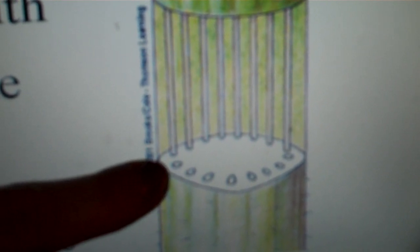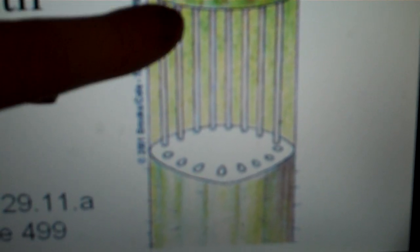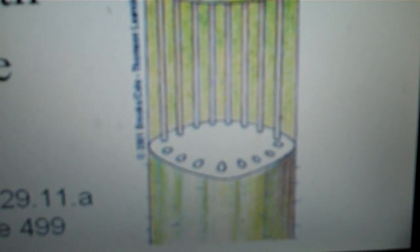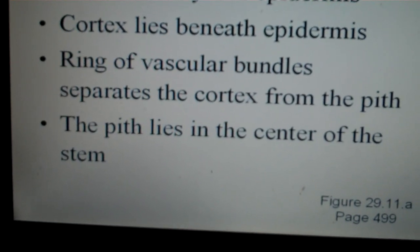You can see in this picture, we have our epidermis, then the cortex, a very thin layer. These little tiny circles are our vascular bundles, or you can see them in lines since they run the length of the plant. The internal part that's white here is the pith. The pith lies in the center of the stem.